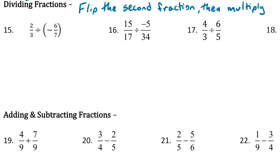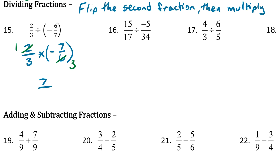For number 15, first step is flip. We have 2 thirds, and we're going to flip the second fraction so it becomes negative 7 over 6. Then instead of dividing, we're multiplying now. I see 2 and 6 — 2 goes into 2 once, 2 goes into 6 three times. Top times top: 1 times 7 is 7. Bottom times bottom: 3 times 3 is 9. One of them is negative, so the answer is negative 7 ninths. And that's all there is to dividing.